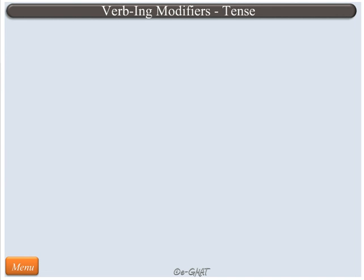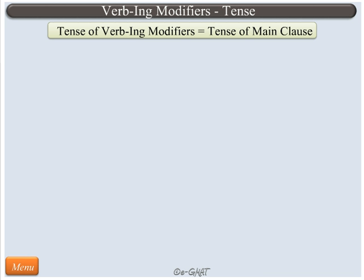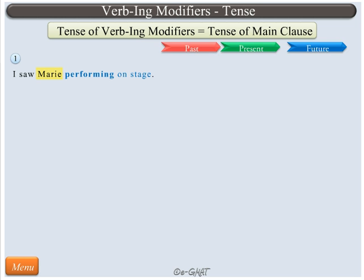Even though verb ING modifiers do not function as verbs, since they denote an action, they possess the characteristic of tense. The timing of action represented by verb ING modifiers is equal to the timing of the main clause. For example, in this sentence, 'performing on stage' modifies Mary. The main clause verb takes place in the past, and hence the action of performing on stage also takes place in the past. The context of action of a verb ING modifier is set by the action of the main clause.